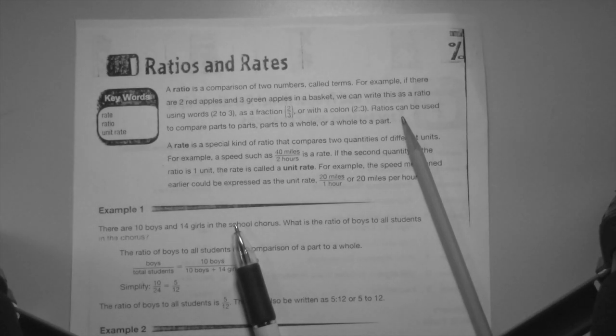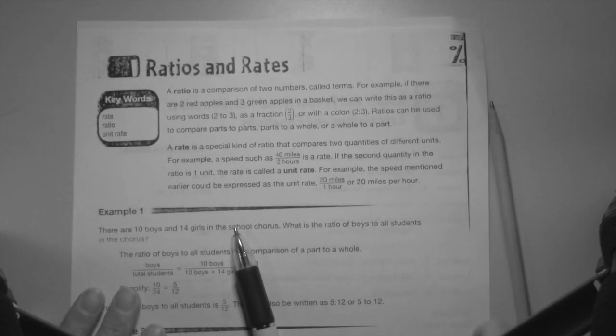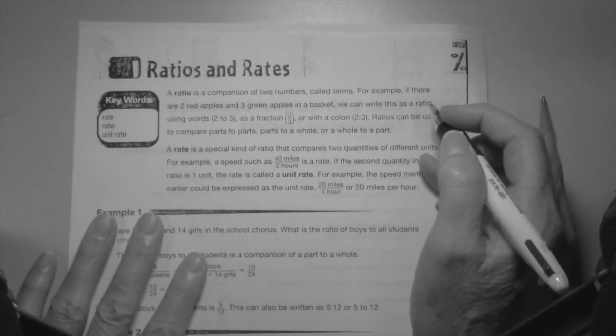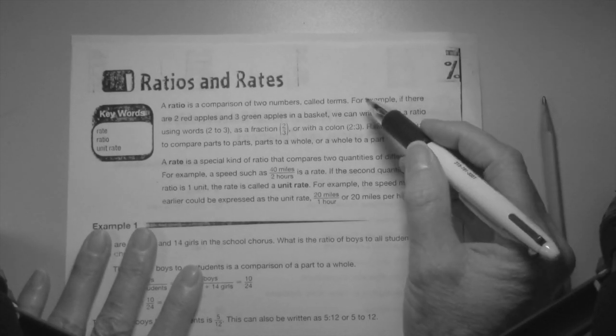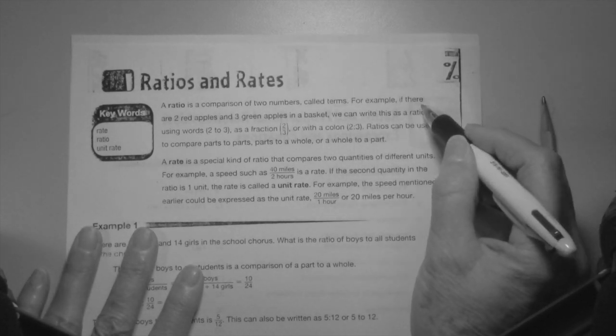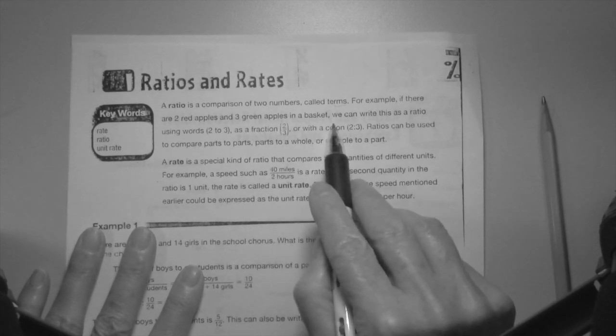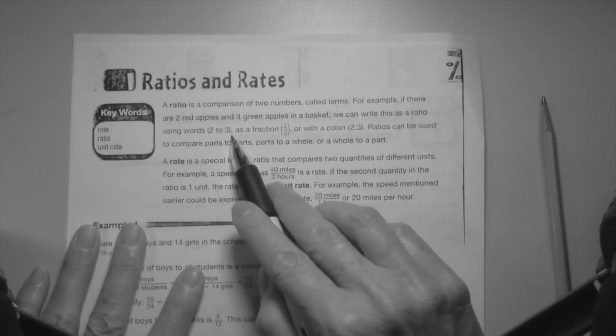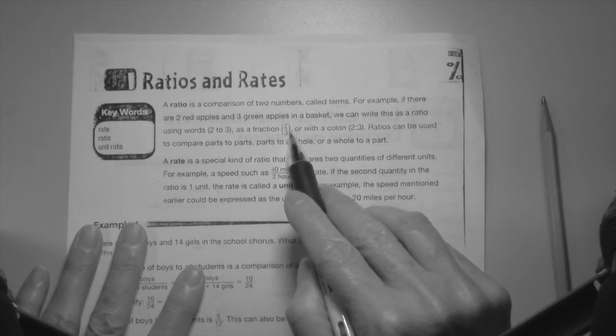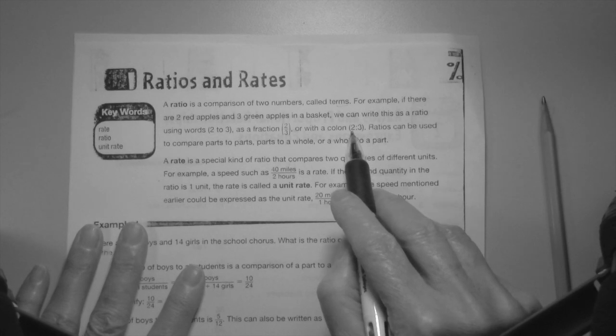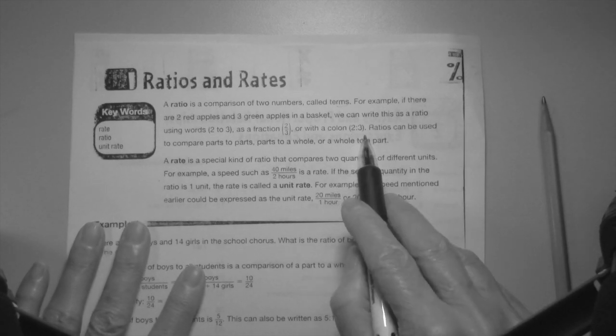Ratios and rates. A ratio is a comparison to numbers called terms. For example, if there are two red apples and three green apples in a basket, we can write this as a ratio of the words two to three, as a fraction it's two over three, or with a colon it's two to three.